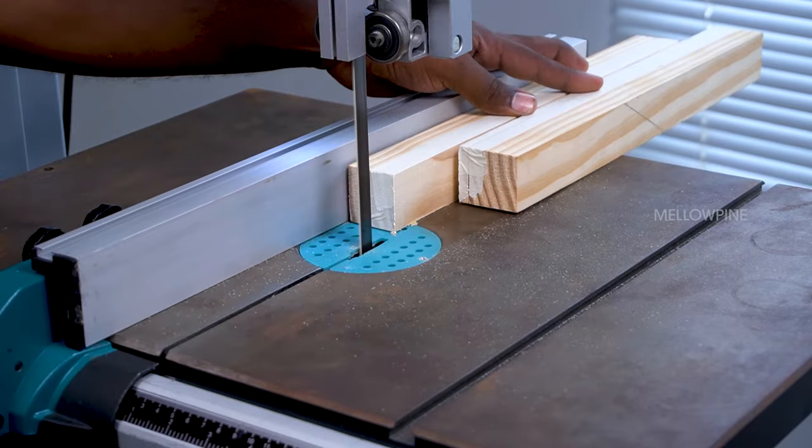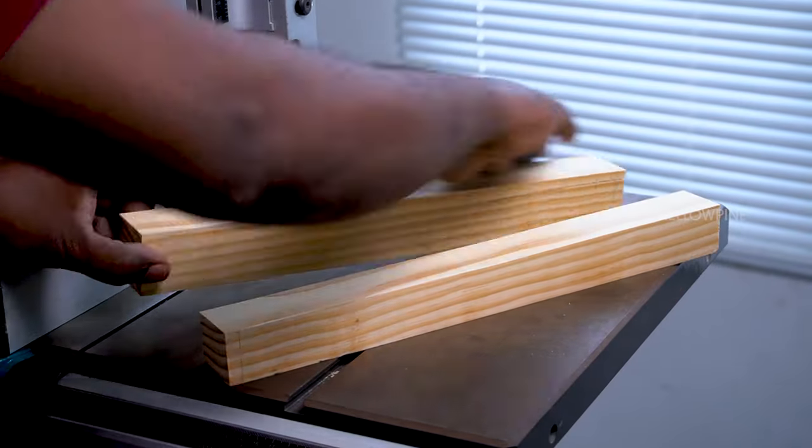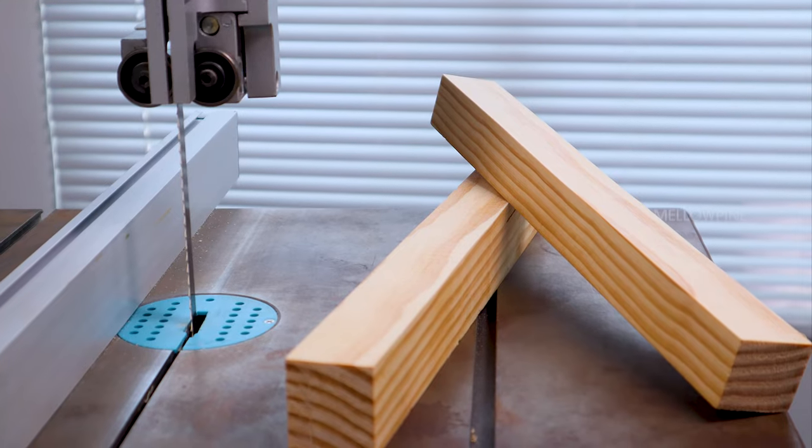Once the cut has been made, smoothen the edges using sandpaper. With that, you have successfully completed ripping wood with a bandsaw.